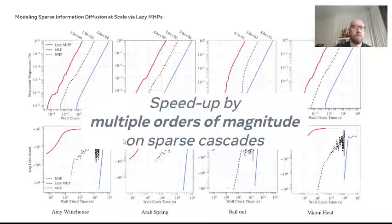The big takeaway message from this plot is that our approach to Lazy MHPs offers speed ups by multiple orders of magnitude on this kind of data, and this is really significant. For instance, for the Amy Winehouse case, the standard maximum likelihood estimate takes something like 2.6 times 10^4 seconds to make one pass through data versus a Lazy MHP which only takes 3.3 seconds.